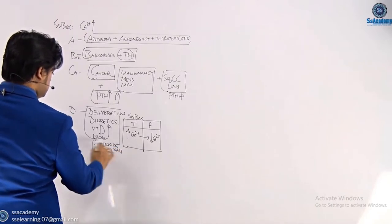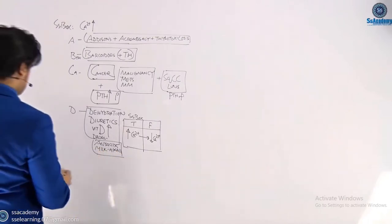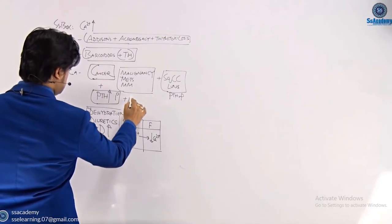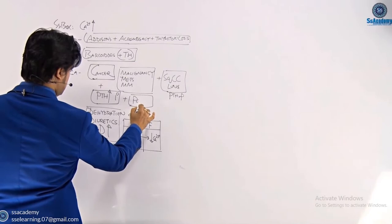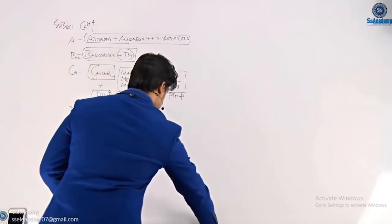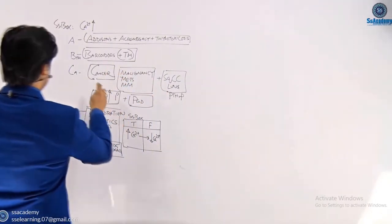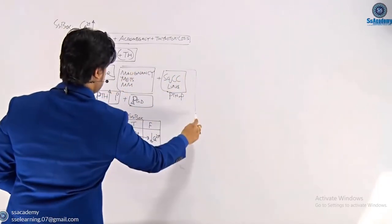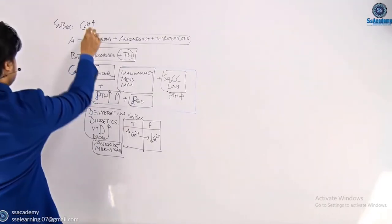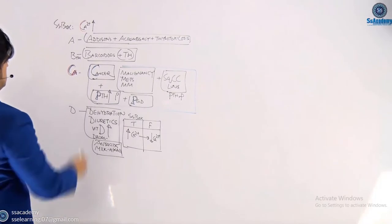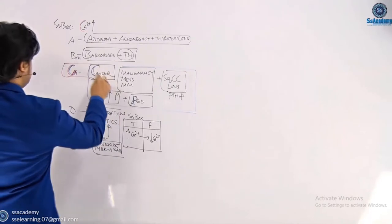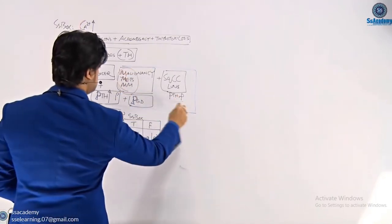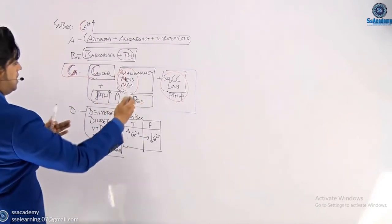So the ABCD summary: C for cancer — malignancy, metastasis, multiple myeloma, and PTH-related peptide from squamous cell lung cancer. PTH up means primary hyperparathyroidism. Also Paget's disease causes hypercalcemia only with immobilization. B for sarcoidosis (BTH bundle pack — granulomatous disorder). A for Addison's, acromegaly, thyrotoxicosis. D for dehydration, diuretics, vitamin D, and drugs.